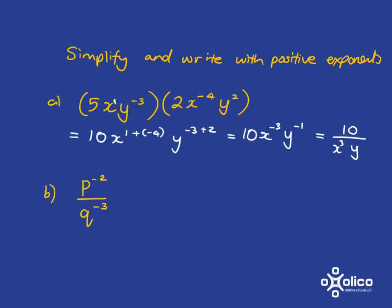This next one, if we do it the long way round, what I have is p to the negative 2 divided by q to the negative 3. Which means I've got 1 over p squared divided by 1 over q cubed. And I know that with fractions, I turn that into a multiplication. And then I flip this so it becomes multiplied by q cubed over 1. Which becomes q cubed over p squared.